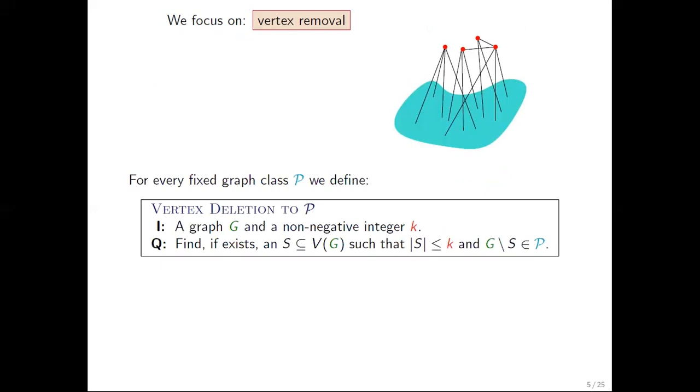In our approach, we allow only vertex removals. Thus, for every fixed graph class P, we define vertex deletion to P. Given a graph G and a non-negative integer k, we ask to find a vertex set of size at most k that, after removal from G, the resulting graph is in P.